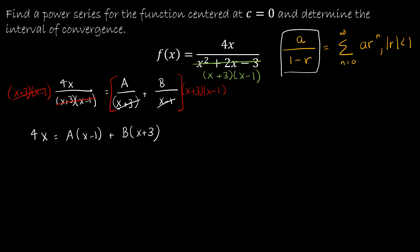I'm going to assume you've used partial fractions before and not go through it in great detail — if you need more detail, go back to a partial fractions video. I'll make it easy by choosing x = 1. That gives 4·(1) = 4, equal to A·(1 − 1), which is 0, plus B·(1 + 3), so 4 = 4B, therefore B = 1.